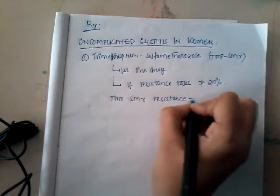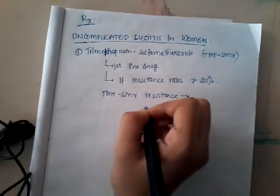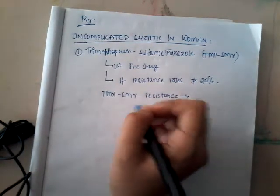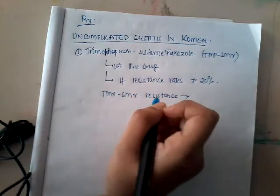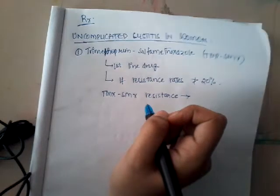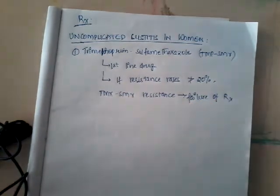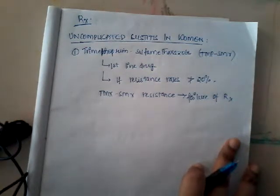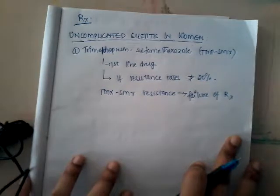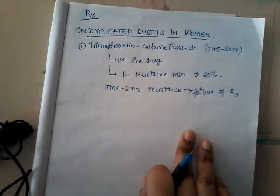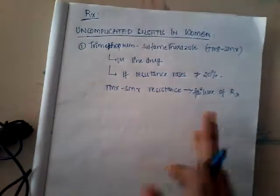Trimethoprim-sulfamethoxazole resistance has important clinical implications. In places where TMP-SMX resistance is higher, the drug will not work and treatment failure will occur. So TMP-SMX therapy should only be considered if the resistance rate is less than 20%. Generally, TMP-SMX is used in uncomplicated UTI as the first-line drug regimen.